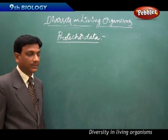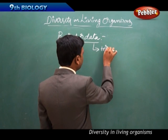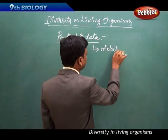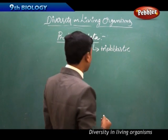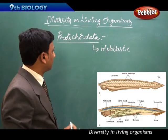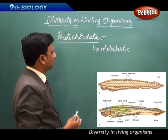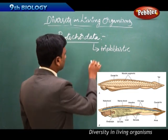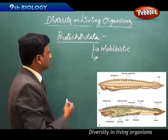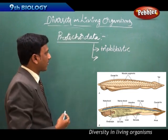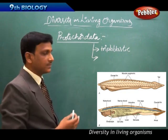The next phylum is Protochordata. These animals are triploblastic, just like the previous phyla such as Echinodermata, Annelida, and Arthropoda — they have three layers of cells.